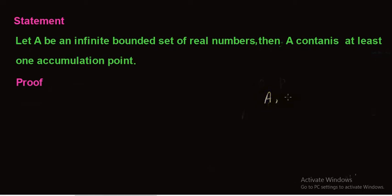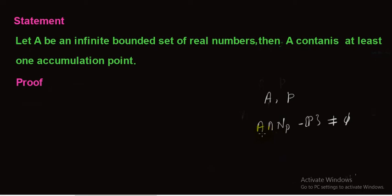For a set A, a point P is the limit point of set A if every neighborhood of point P contains a point of A other than P itself. That is, A intersection (neighborhood of P minus P) is non-empty for all neighborhoods of point P. If this condition is satisfied for all neighborhoods of point P, then we say that point P is the limit point of A.